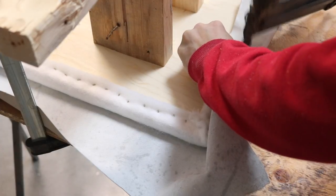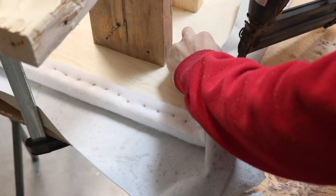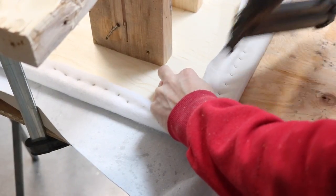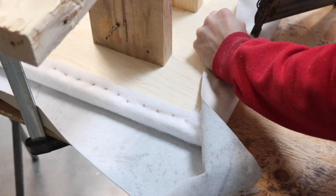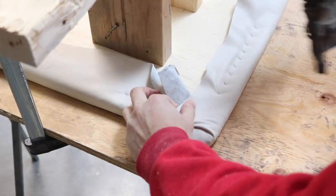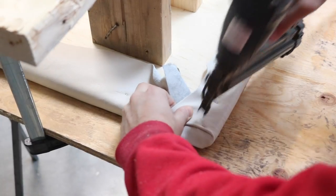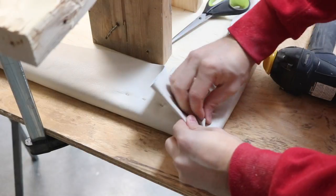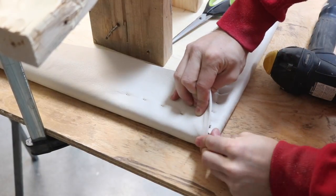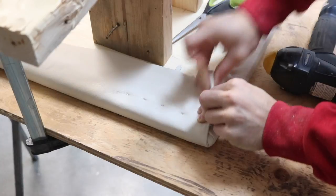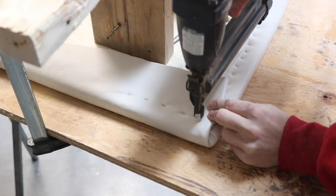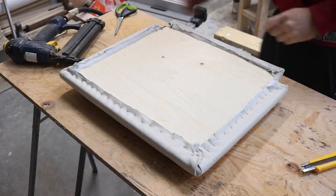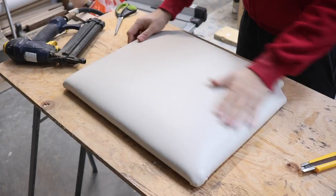Once the batting was done, I repeated the process for the leather, pulling tightly as I stapled it down. Once it was all stapled, I removed the clamps, took off the 2x6 T, and flipped the seat for an almost perfect upholstery job.